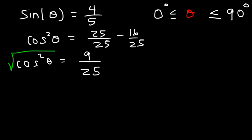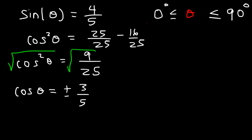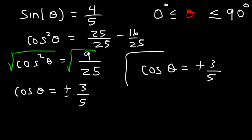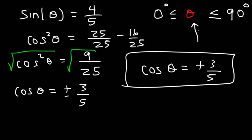Now we take the square root of both sides. The square root of 9 is 3, and the square root of 25 is 5, so cosine can be plus or minus 3 over 5. To determine the sign, we look at the quadrant. Theta is in quadrant 1 — between 0 and 90 degrees — and in quadrant 1, cosine is positive. So the answer is positive 3 over 5. We use the quadrant to find the final sign.